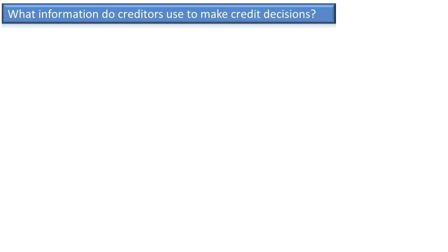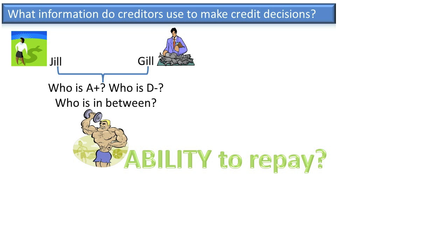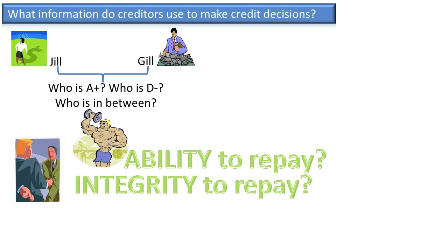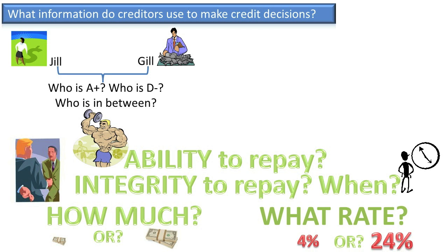What information do creditors use to make credit decisions? One of the challenges creditors have is obtaining sufficient information and properly analyzing it to distinguish between A-plus and D-minus borrowers. Their analysis should help answer five key questions: one, does the borrower have the ability to pay the money back as promised? Two, does the borrower have the integrity to pay back as promised? Three, when will the borrower pay the money back? Four, how much should the borrower be allowed to borrow or purchase on account — $1,000, $10,000, $500,000? Five, what rate, if any, should be charged?